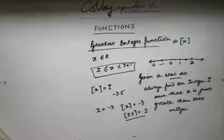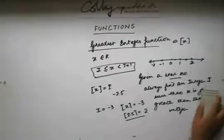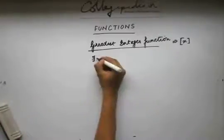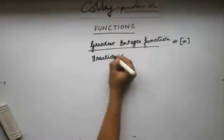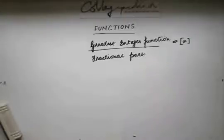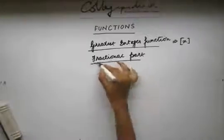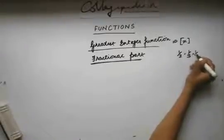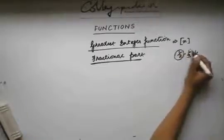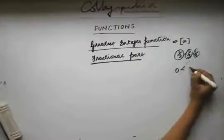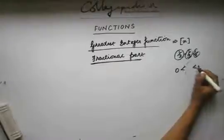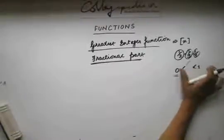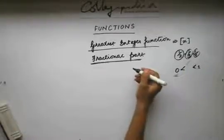Similar to the box function, we have something called the fractional part of a real number. When I say fractional part, what comes to your mind? You think of fractions like 1/2, 1/3, 1/4 — a rational number of the form p by q such that the fraction lies between 0 and 1. That is how you have been taught what a fraction is. Now let's see what a fractional part of a real number is.